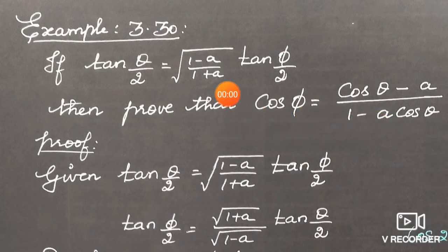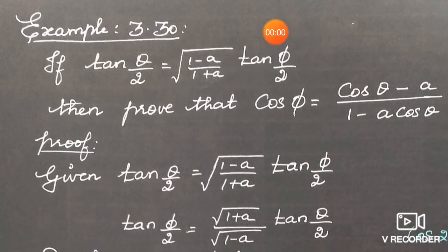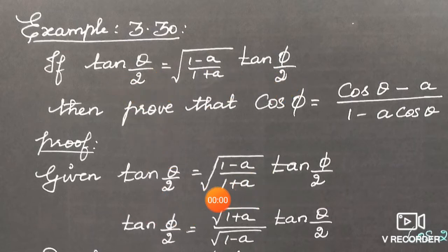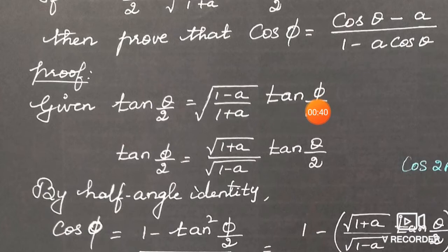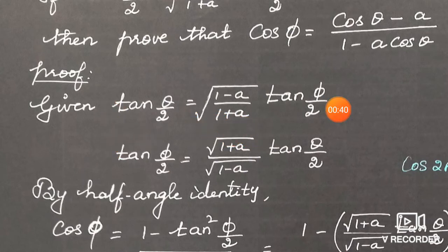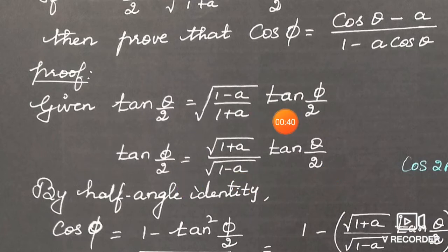Starting from the given equation tan(θ/2) = √((1-a)/(1+a)) · tan(φ/2), we need to modify it slightly. Bring √((1-a)/(1+a)) to the other side, so tan(φ/2) = √((1+a)/(1-a)) · tan(θ/2).